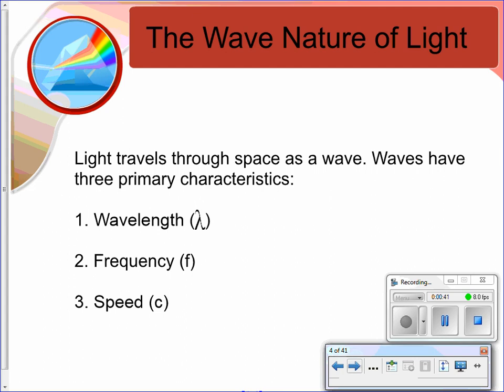So let's talk about it as a wave first. Light travels through space as a wave, and waves have three primary characteristics. The first is wavelength, the second is frequency, and the third is speed. And we're going to talk about each of these individually.